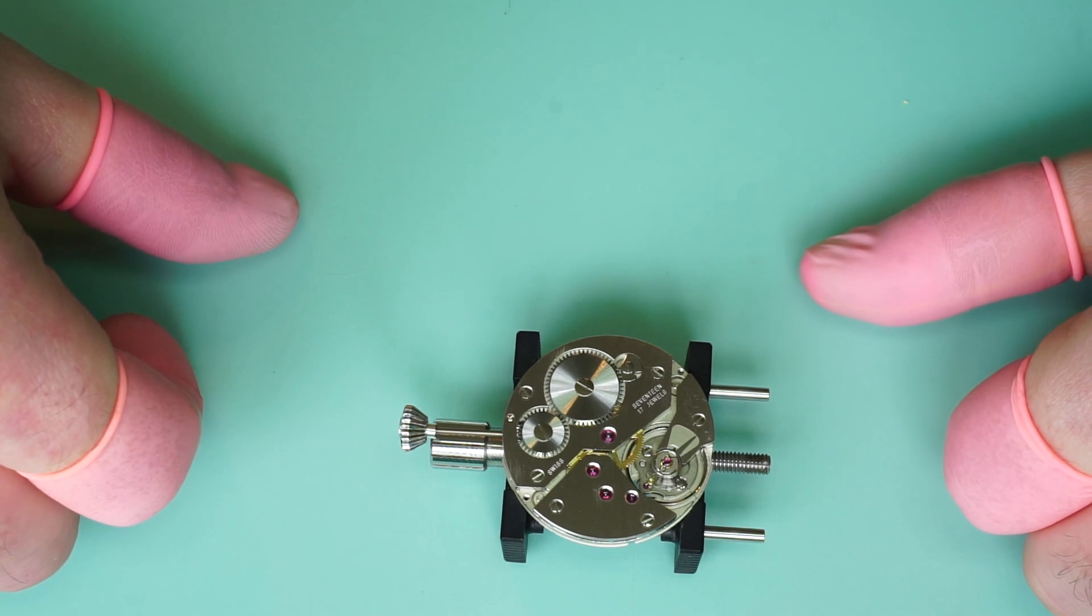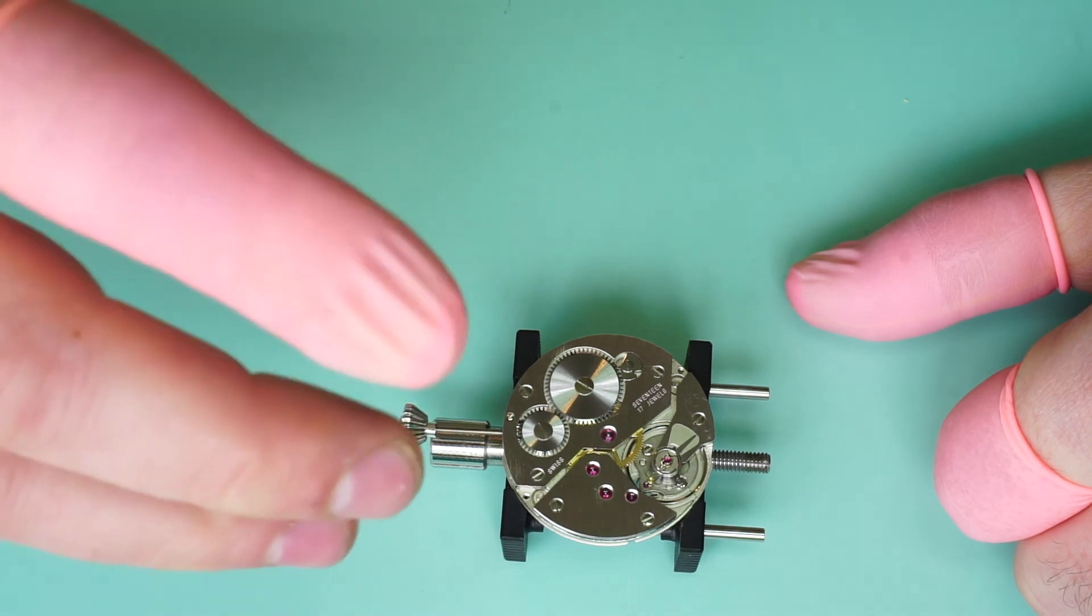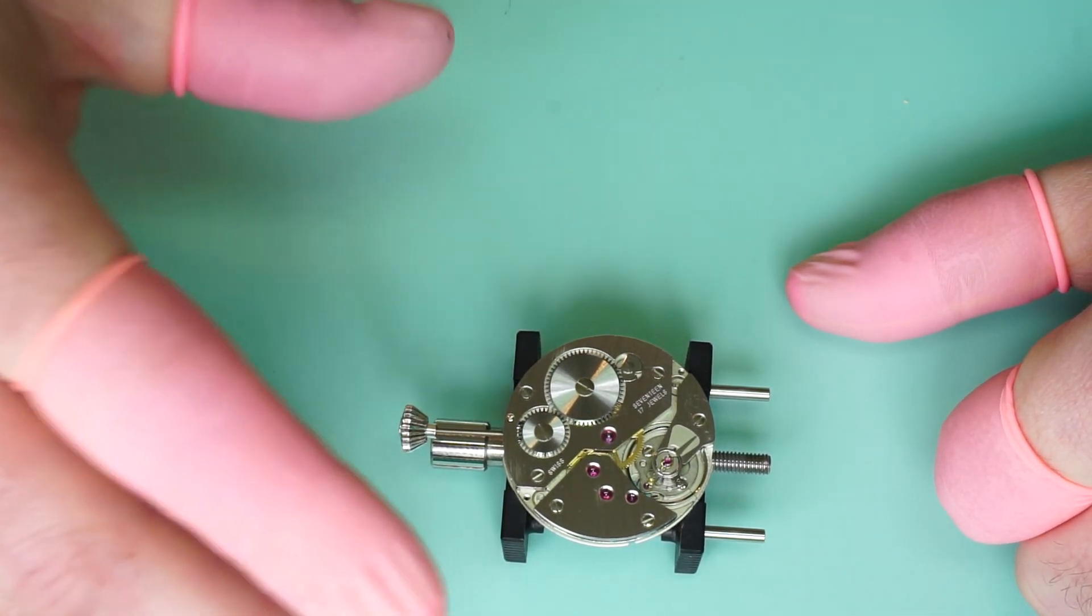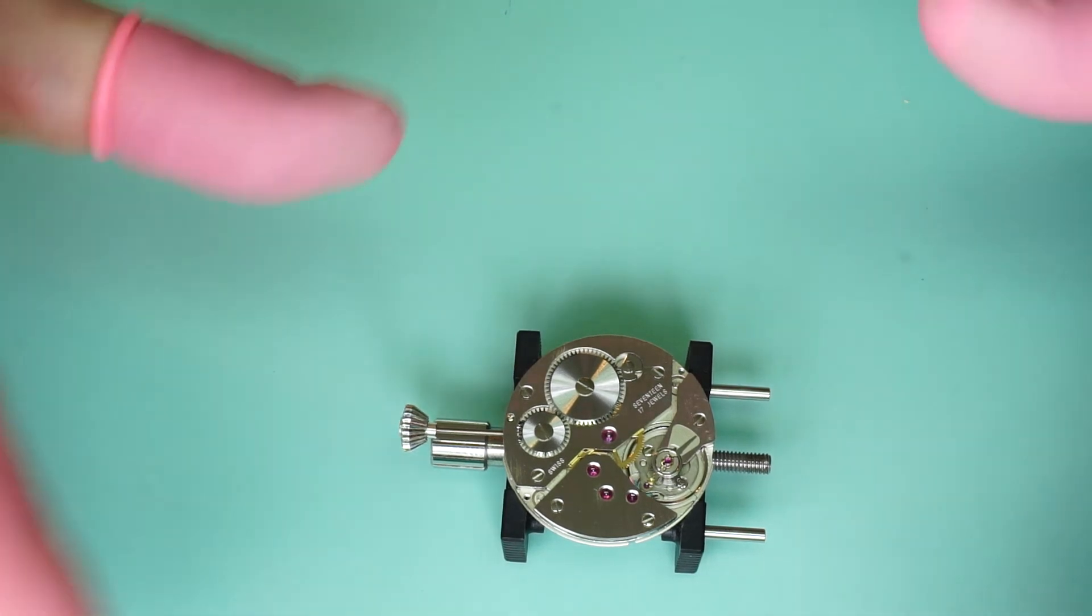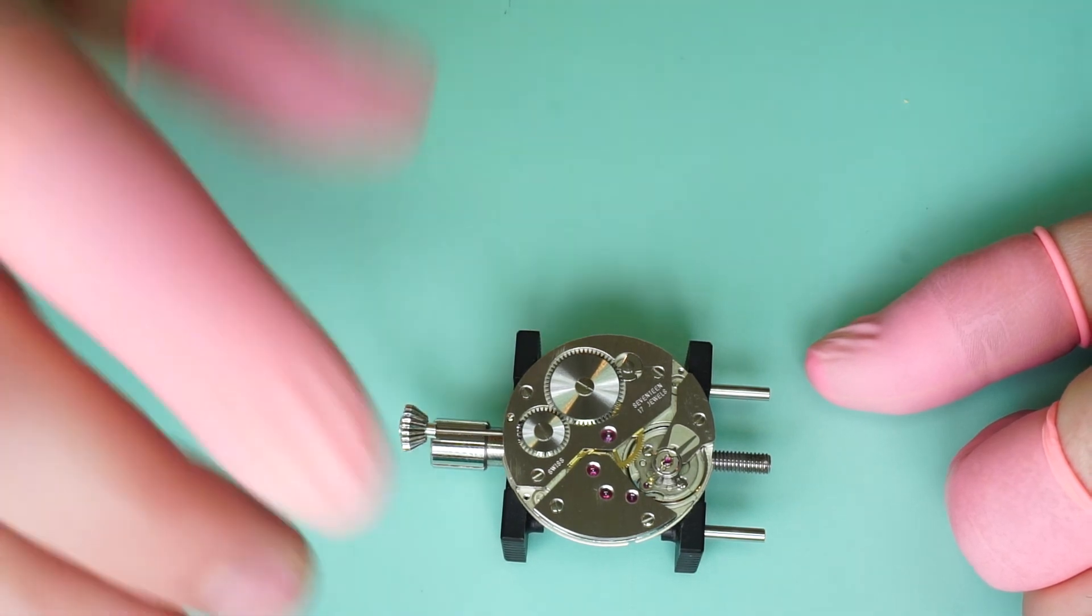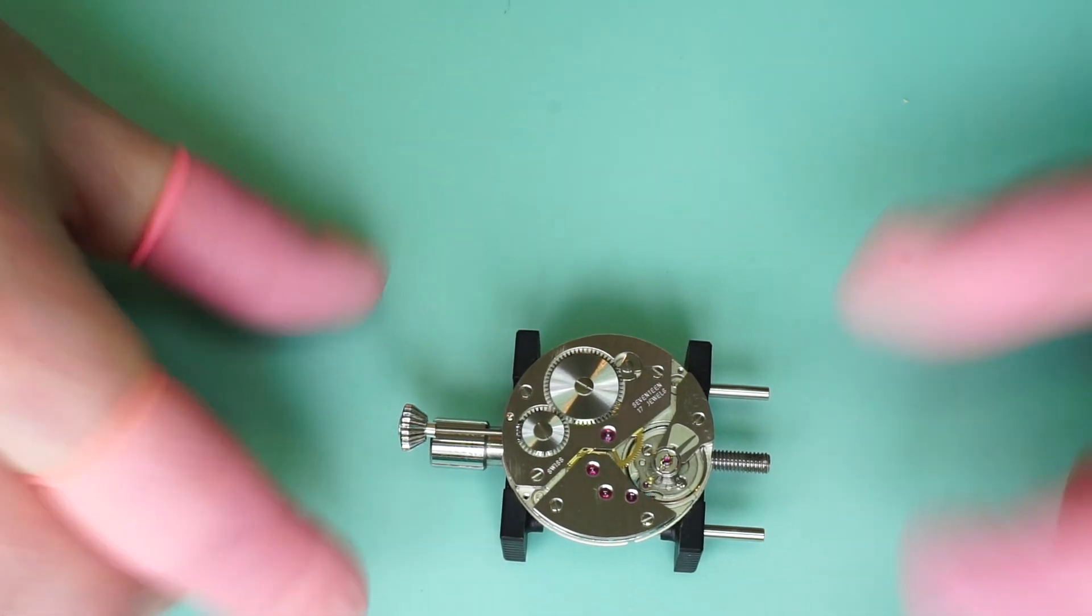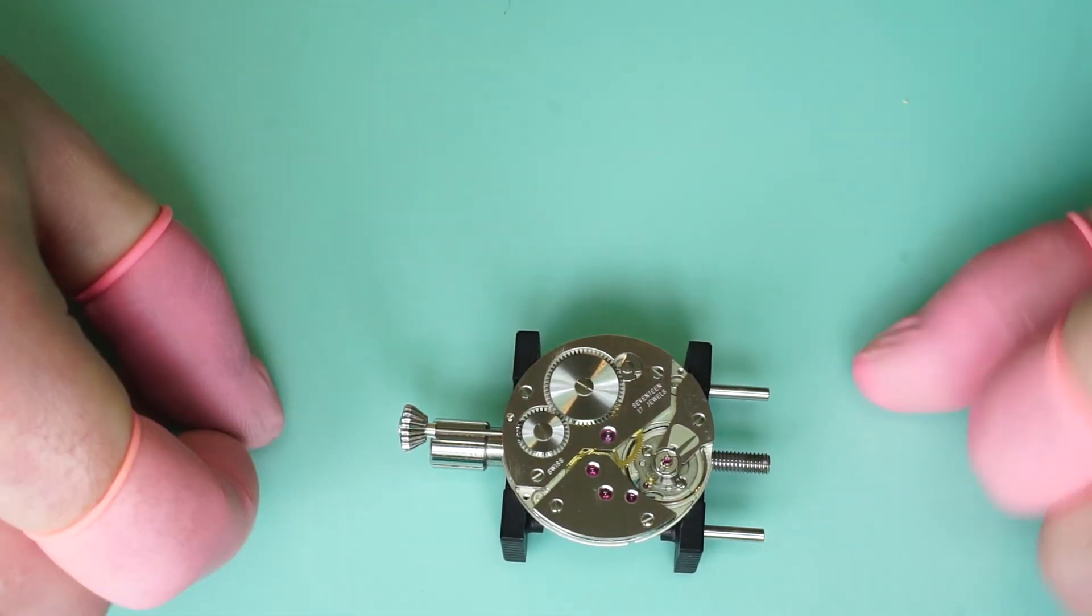But hopefully this video has proven helpful. In the next video we're going to go over the timing aspects. How you check the timing of the movement to make sure everything is right. And how to use the time grapher to see if the timing is okay. So that will be in the next video. And then the final video will be the reassembly of the dial and hands and casing once that's all done.